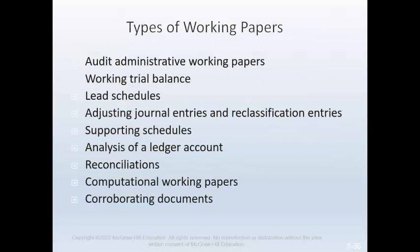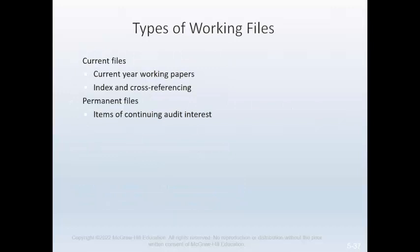Common types of working papers included in an audit are grouped into general categories: audit administrative working papers, working trial balance and lead schedules, adjusting and reclassification entries, supporting schedules, analysis, reconciliations, and computational working papers and corroborating documents. Auditors usually maintain two files of working papers for each client: a current file for every completed audit and a permanent file of relatively unchanging data. The auditor's report for a particular year is supported by the working papers contained in the current files, and many CPA firms organize current files around the arrangement of the accounts in the client's financial statements.